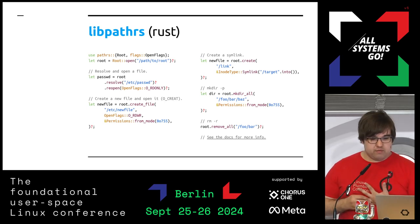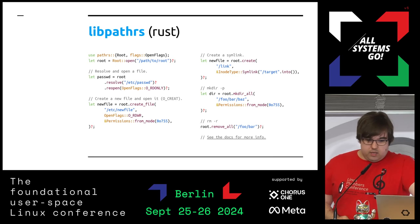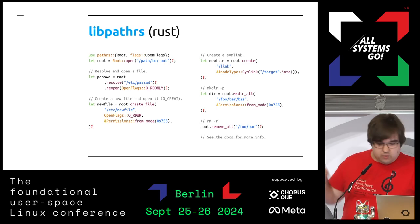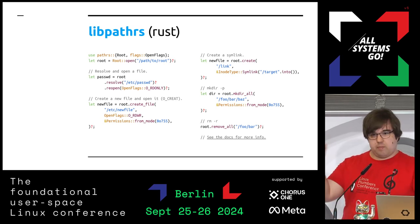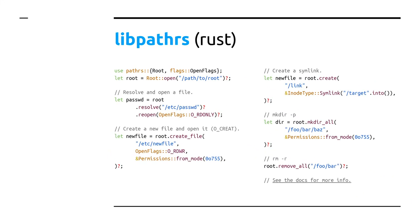This is what it looks like from Rust. You have a Root that you open and then everything is done in relation to it. When you open a file it's a two-step process. You can resolve a path and then reopen it to get an actual handle you can read. You can create files, you have O_CREAT-style atomic create-and-open. For stuff you can't do that with, you can create any kind of inode — symlinks, hard links, whatever you like.